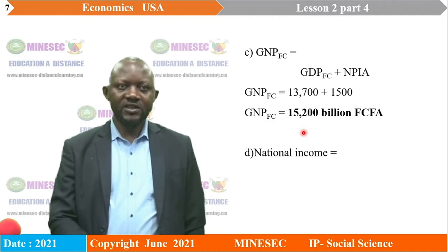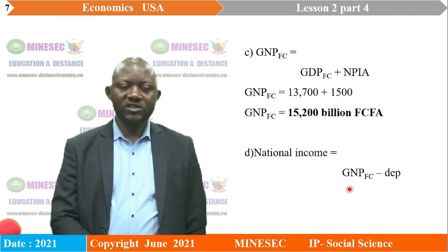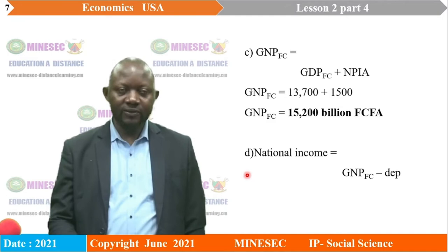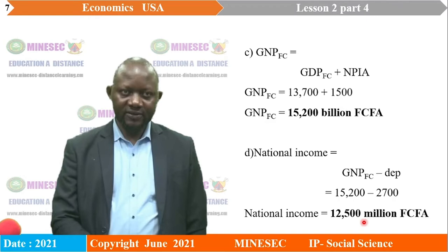Now let's get to the national income. National income equals gross national product at factor cost minus depreciation. Depreciation has been given as 2,700. So we take 15,200 minus 2,700, which gives us 12,500 million francs — that is our national income.